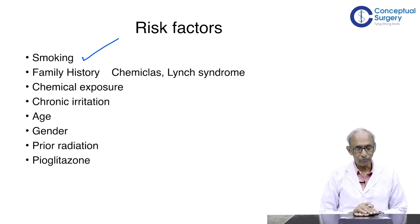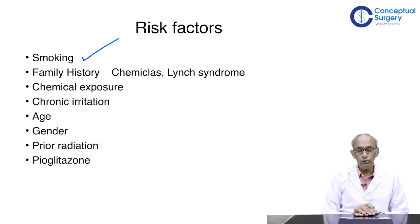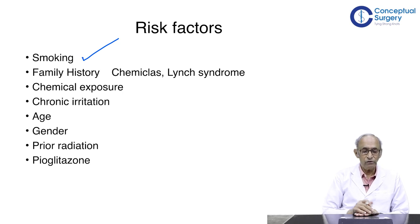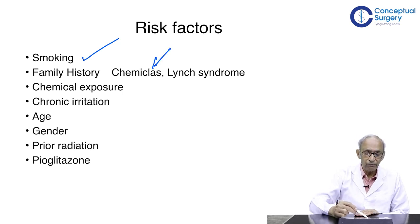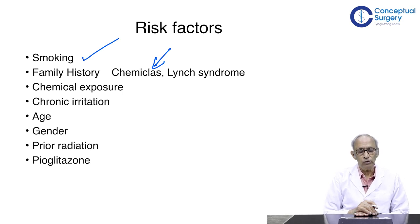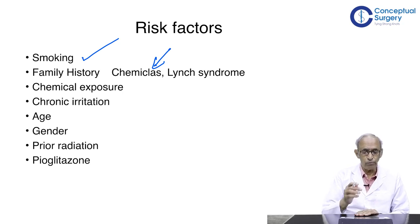Regarding family history, there are indeed genetic factors which make family members prone to this tumor. However, a certain group within a family may also be working in similar industries — for example, a father and son both working in a rubber or print factory. There is also Lynch syndrome, where carcinoma of the colon is common and bladder tumors are similarly common in that group.